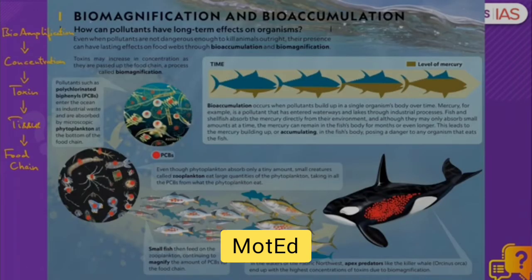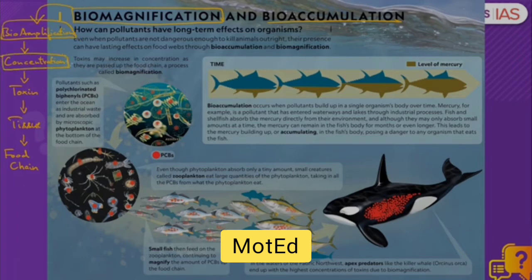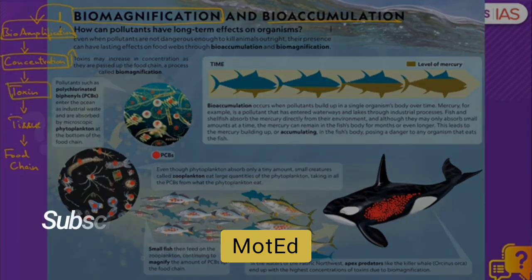To answer this question, you need to understand what is biomagnification and bioaccumulation. First, let's talk about biomagnification. Biomagnification is also referred to as bioamplification. It is nothing but the increasing concentration of a particular toxin in the tissue of organisms as you move up the food chain.